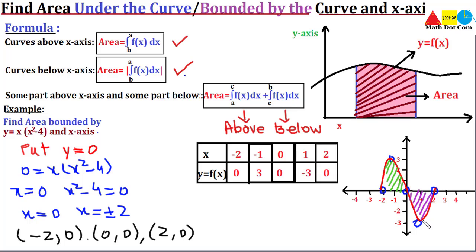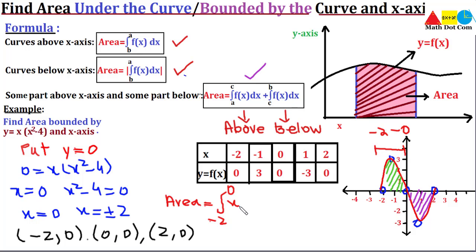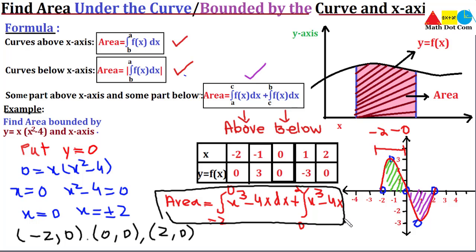Using the formula for when a curve has parts both above and below the x-axis, the total area equals: ∫[-2 to 0] (x³ - 4x) dx + |∫[0 to 2] (x³ - 4x) dx|. The first integral covers the region above the x-axis from -2 to 0, and the second covers the region below from 0 to 2. We will solve this to get the bounded area.